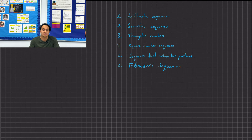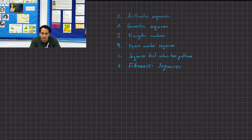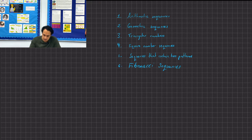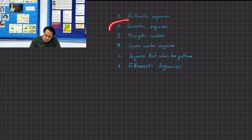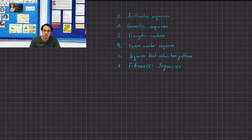Today we're looking at sequences. There are quite a few different types of sequences that you can encounter in 11 plus exams and at Key Stage 2 and Key Stage 3. Here are some of the most recurring ones: arithmetic, geometric, triangular numbers, square number sequences, sequences that contain two patterns, and Fibonacci sequences.